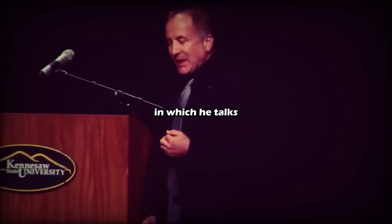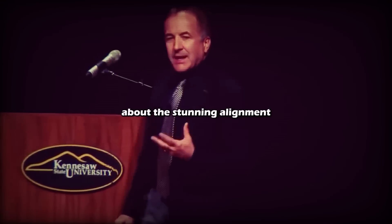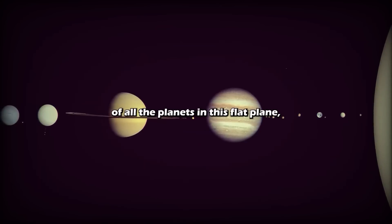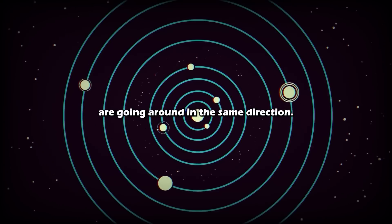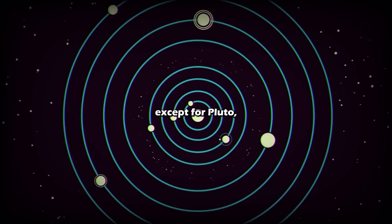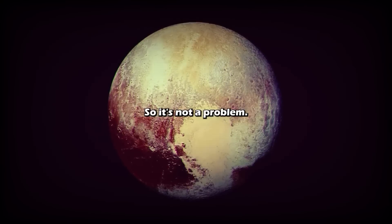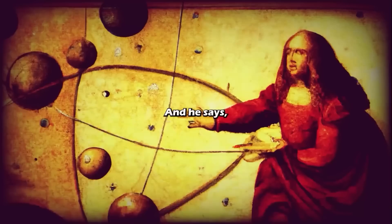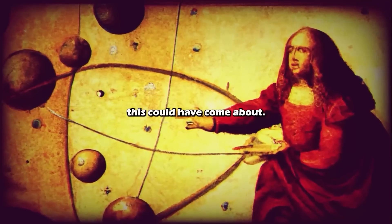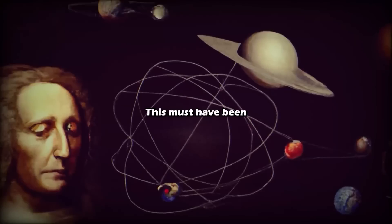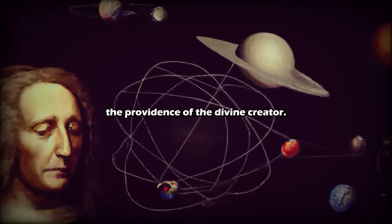Newton has a famous quote in which he talks about the stunning alignment of all the planets in this flat plane, the plane of the ecliptic, which all the planets are going around in the same direction. They're all in this flat plane except for Pluto, which is no longer a planet. It's not a problem. And he says, you know, I can't explain, I can't figure out how this could have come about. This must have been the providence of the divine creator.